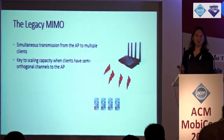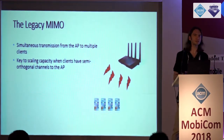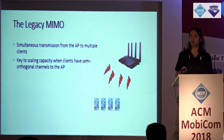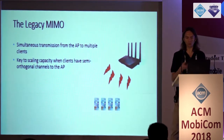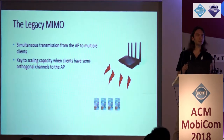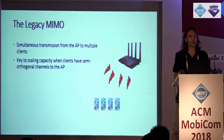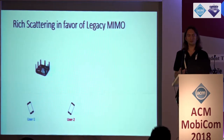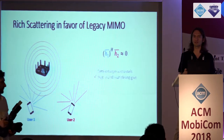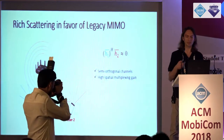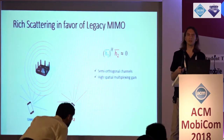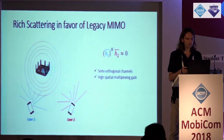So, legacy MIMO — we send multiple data streams to multiple clients simultaneously over the same frequency band in order to increase the system throughput. This works only if we have orthogonal or semi-orthogonal channels among different clients. This is fine in the sub-6 GHz band, where we are privileged with a rich scattering environment, which means we can get semi-orthogonal channels and high multiplexing gain between almost any group of users.